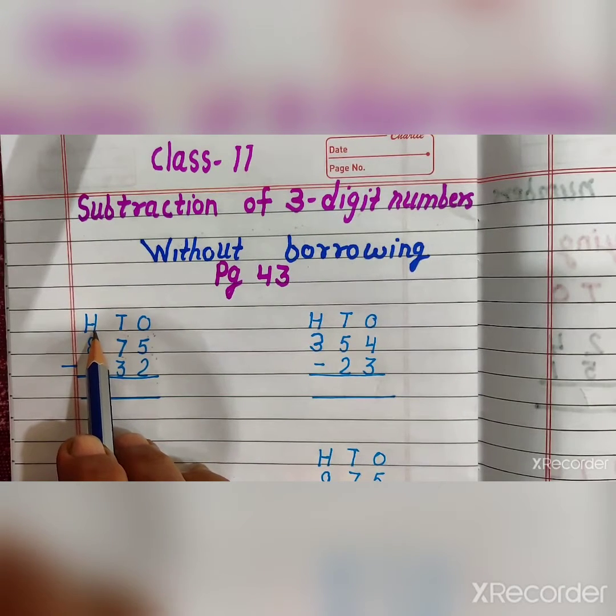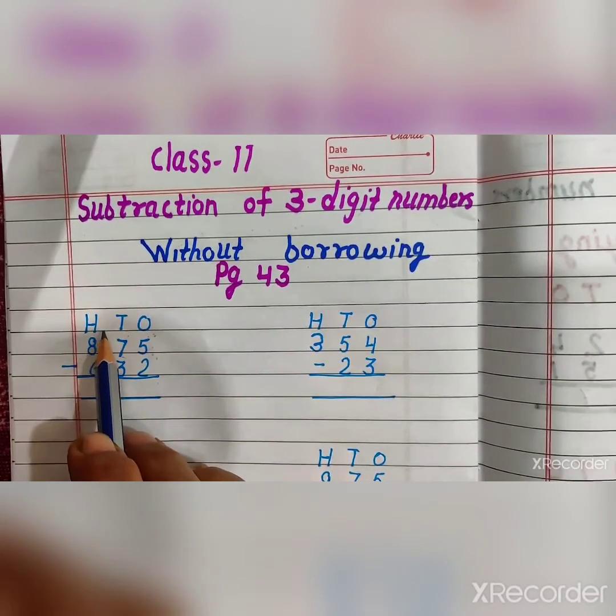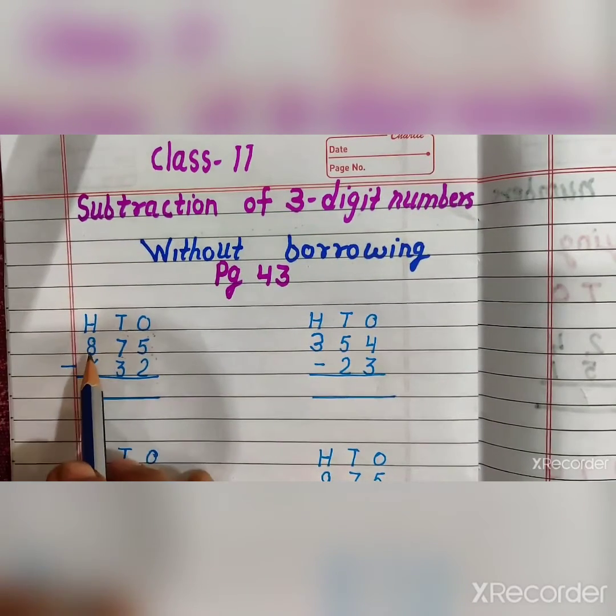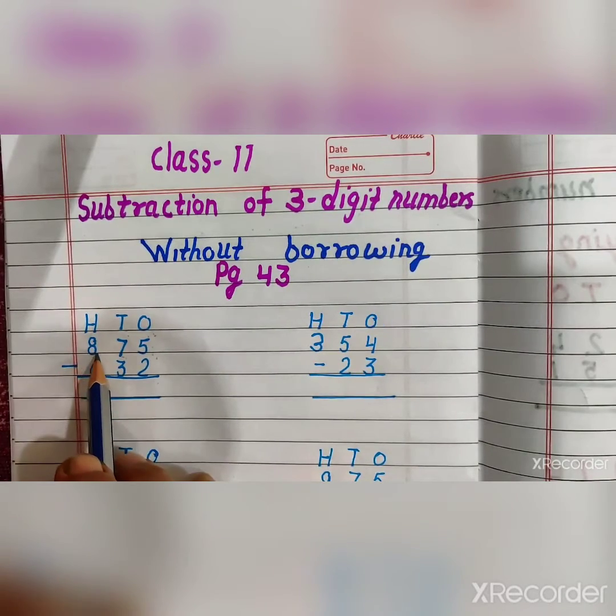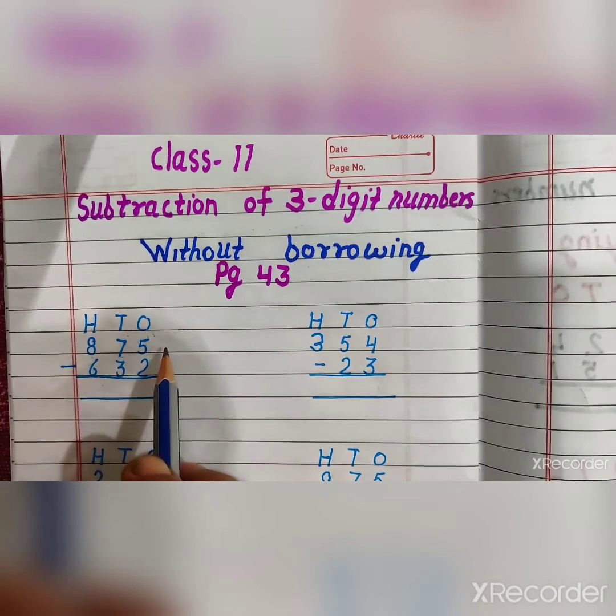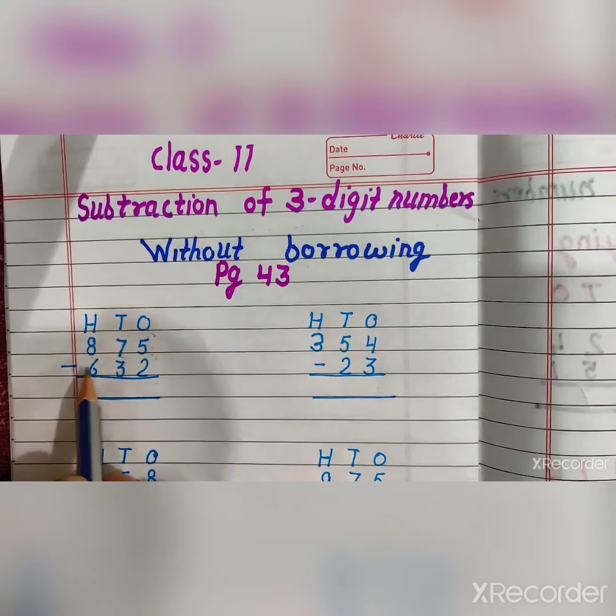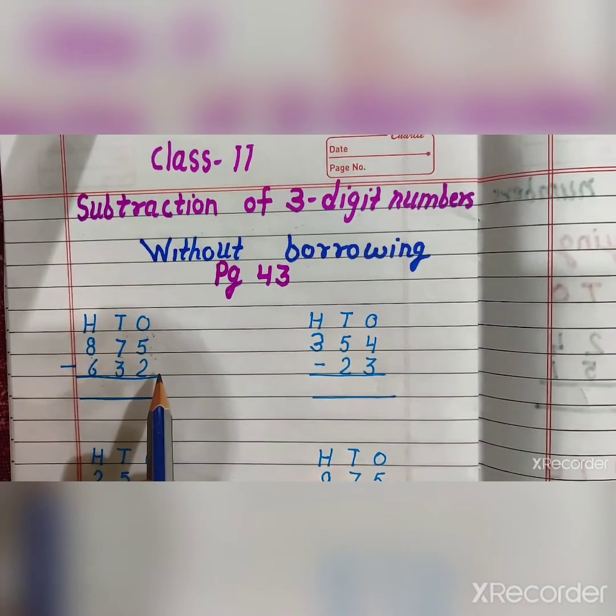We will use finger method. The first example is 875 minus 632.